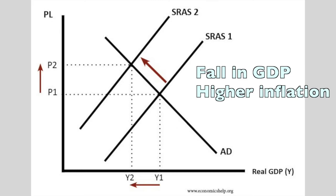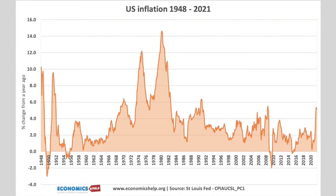The stagflation of the 1970s was a very important economic turning point. Until the 1970s in the post-war period, Keynesian economics had been quite dominant because it seemed the government or central bank could manage the economy through fiscal and monetary policy. If there's a slowdown, cut interest rates and boost spending; if there's inflation, increase interest rates to reduce it.